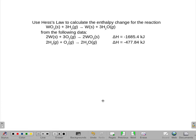Using Hess's law, we're going to calculate the enthalpy change of the following reaction, which has tungsten oxide, some hydrogen, giving us some tungsten and water.